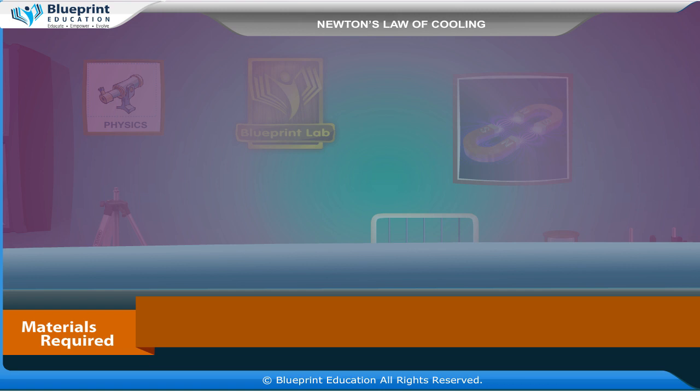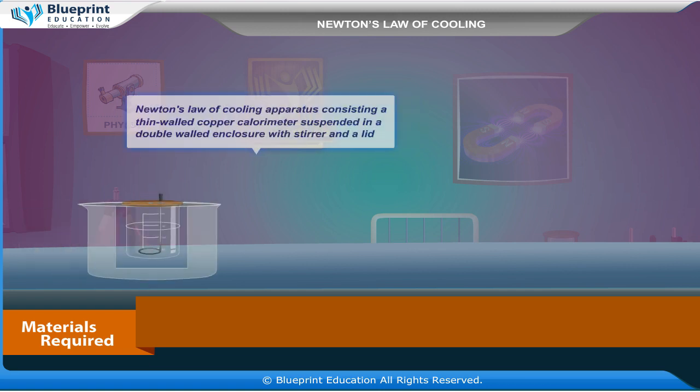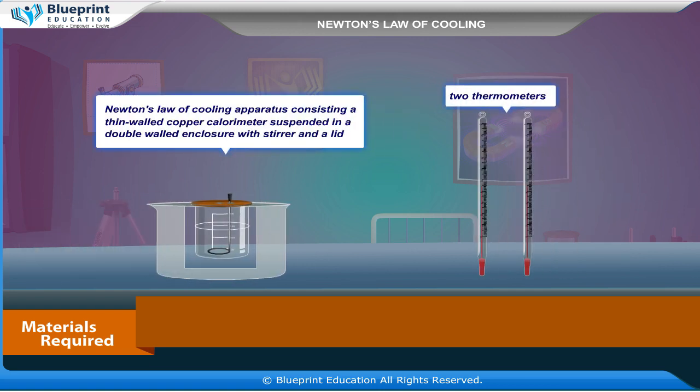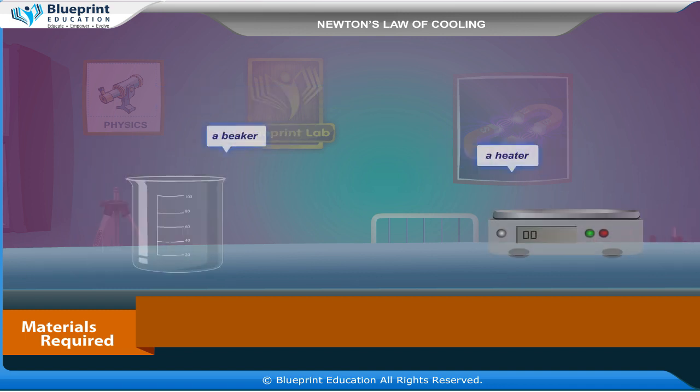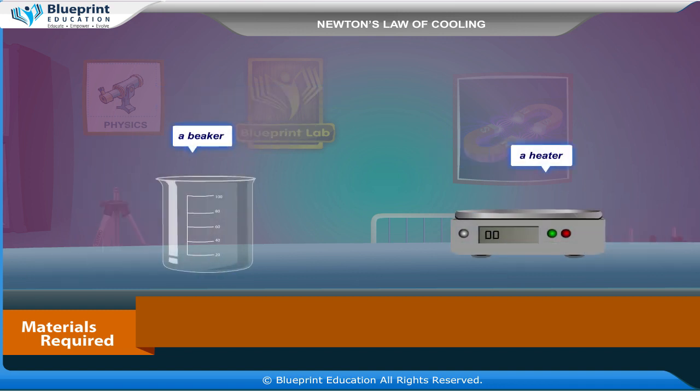The materials required are Newton's law of cooling apparatus consisting of a thin-walled copper calorimeter suspended in a double-walled enclosure with a stirrer and a lid, two thermometers, clamp and stand, stopwatch, a beaker, and a heater.